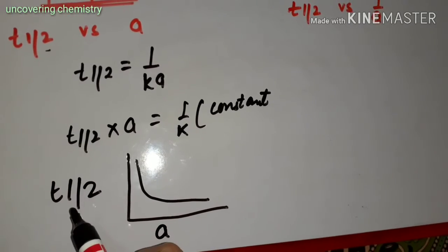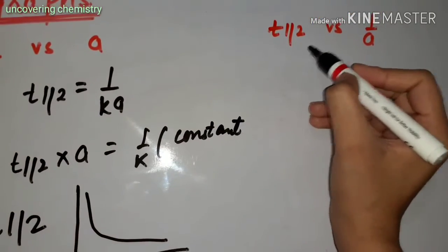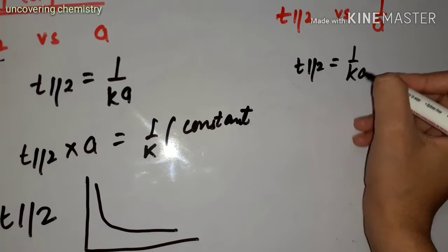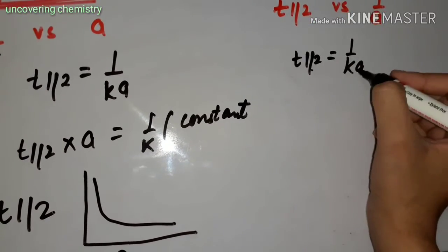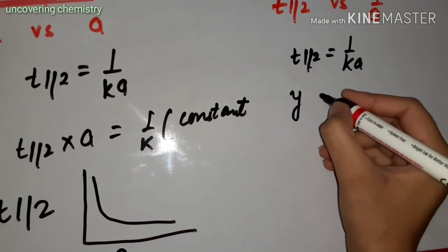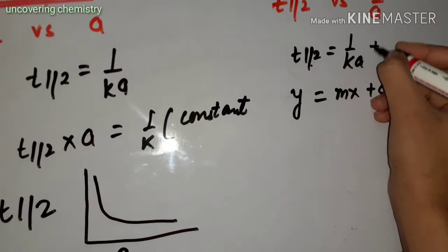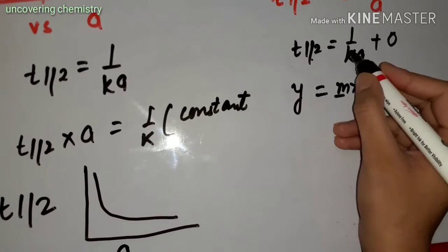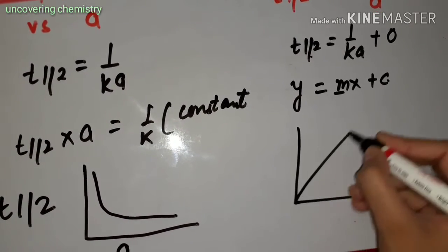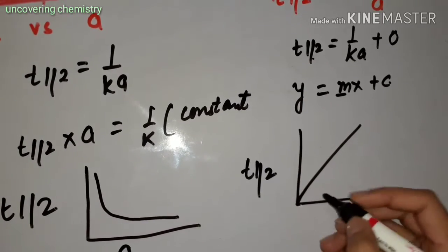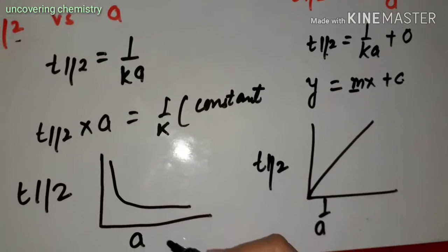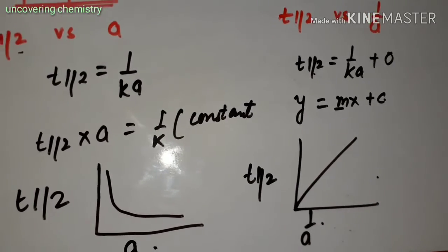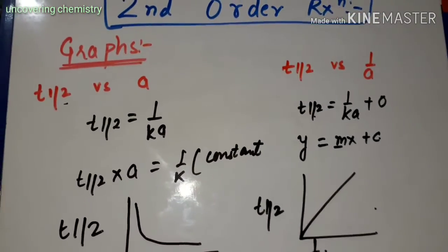If the graph is asked between T-half versus 1 upon A, then from the equation T-half equals 1 upon KA, this is the equation for a straight line: Y equals MX plus C. The intercept here is 0, meaning the straight line passes through the origin, and the slope is 1 upon K. So the graph is a straight line through the origin with positive slope.